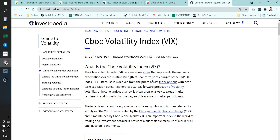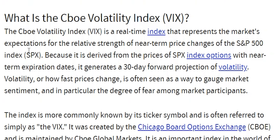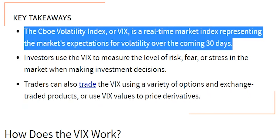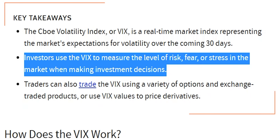Vega is called the volatility index. Let us type volatility index in Google and see what Investopedia says. The CBOE index, or VIX, is a real-time market index representing the market expectation of volatility over the coming 30 days. Investors use the VIX to measure the level of risk, fear, or stress in the market when making investment decisions.